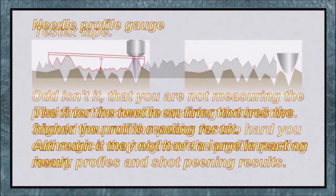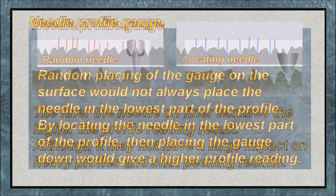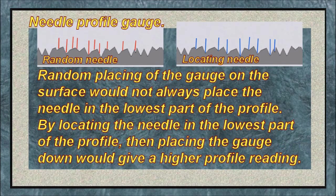Needle profile gauge: the finer the needle on finer textures, the higher the profile reading result, although it may not have a large impact on heavy profiles and shot peening results. Random placing of the gauge on the surface would not always place the needle in the lowest part of the profile. By locating the needle in the lowest part of the profile first, then placing the gauge down, would give you a higher profile reading.